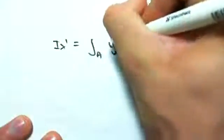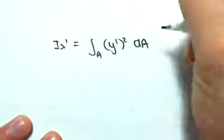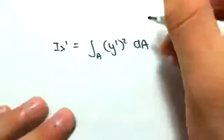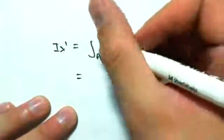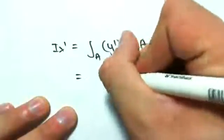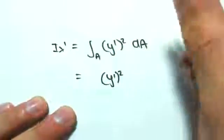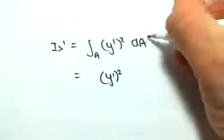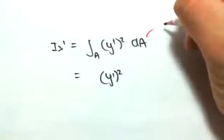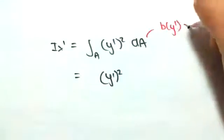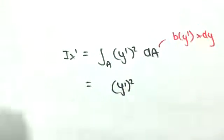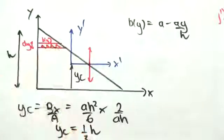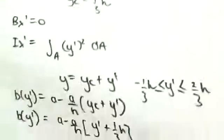So ix dash, we said, is equal to the integral of a y dash squared dA. So this equals y dash squared outside of dA is normally by dy, but now it's b(y dash) times dy.